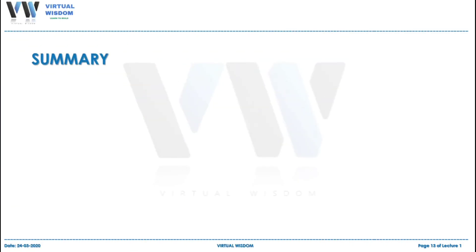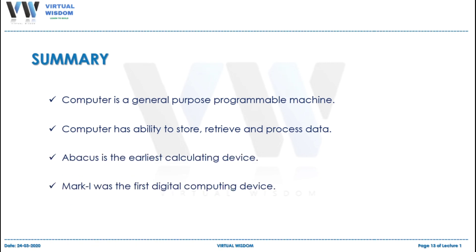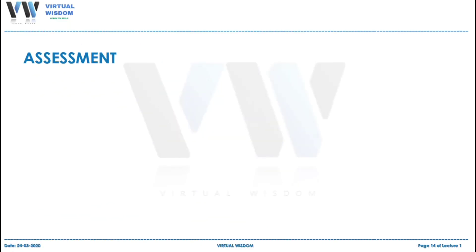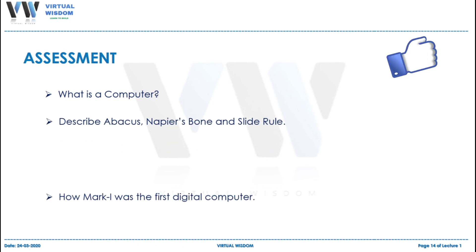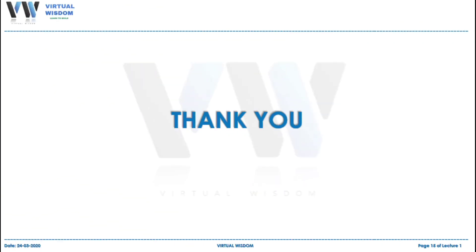In summary, a computer is a general purpose programmable machine with capabilities of storing, retrieving, and processing data. We also discussed the evolution of computer by taking examples of multiple devices. You can try the provided assessment to test what you learned today. Hope you find this lecture helpful. Kindly appreciate by liking this video and subscribing to Virtual Wisdom. Thank you.